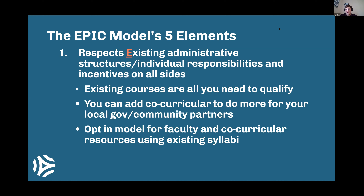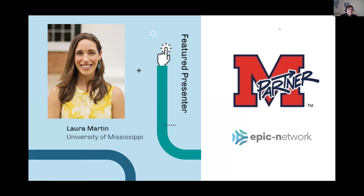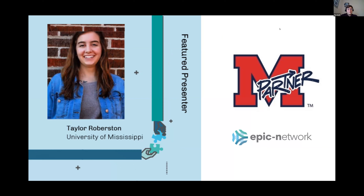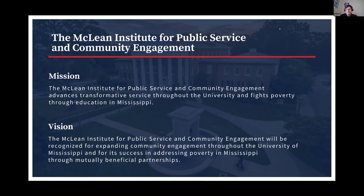Our presenters today, Laura and Taylor, will present on how they've used the model and added to it using other resources their office brings, to innovate and meet the needs of their constituents in Mississippi. Laura Martin serves as Associate Director of the McLean Institute for Public Service and Community Engagement at the University of Mississippi. Taylor Robertson is an AmeriCorps VISTA serving with M-Partner, helping build the bridge between university professors, campus organizations, and Mississippi communities.